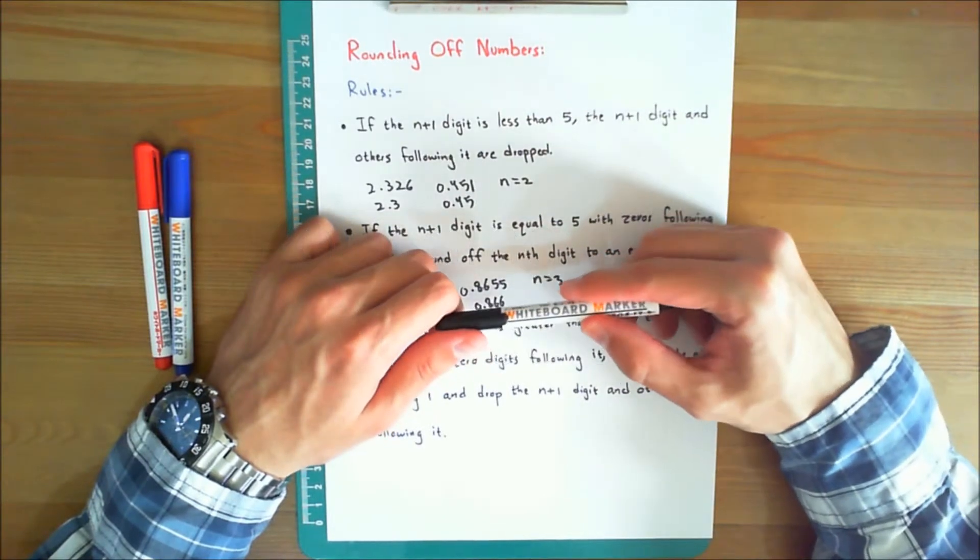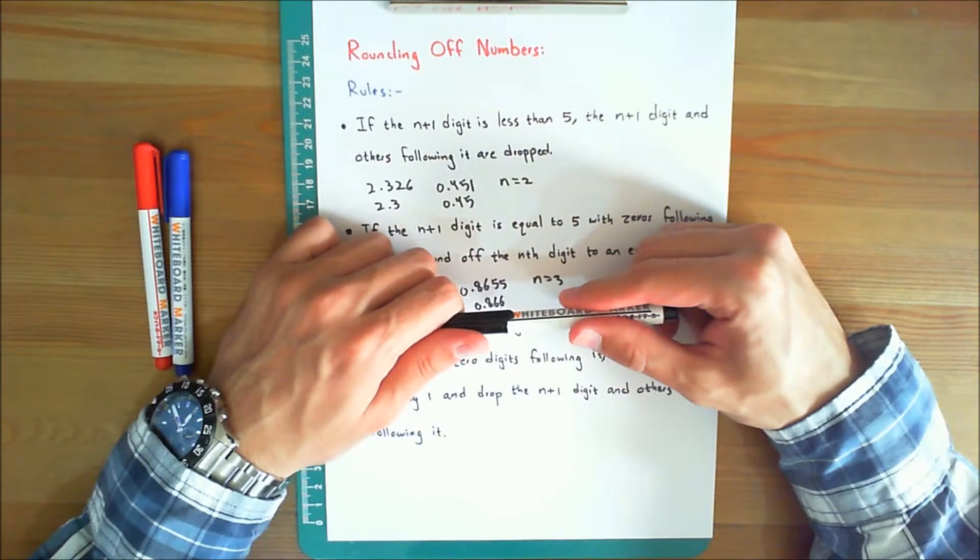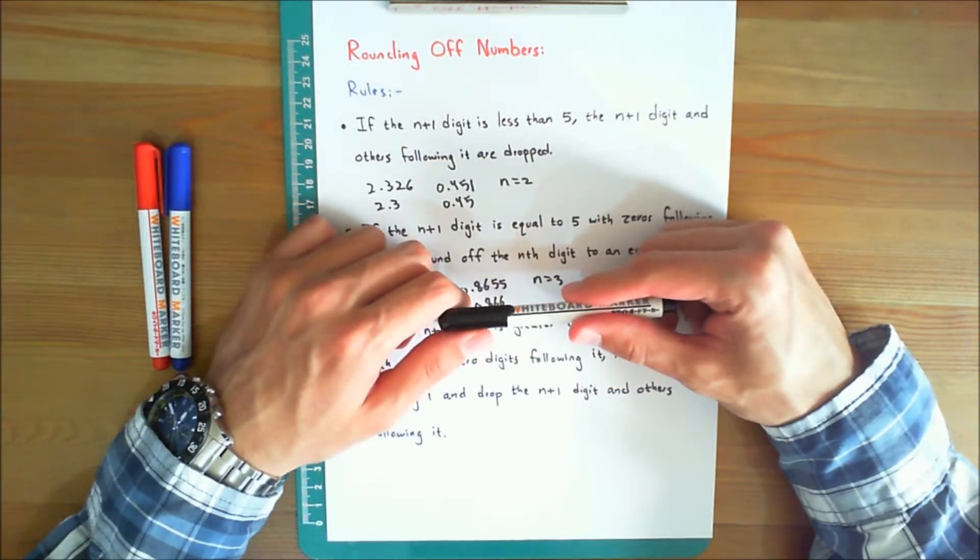Rounding off numbers. For numerical calculations, the accuracy obtained from the solution of a problem generally can never be better than the accuracy of the problem data. Keep this in mind. This is what is to be expected,